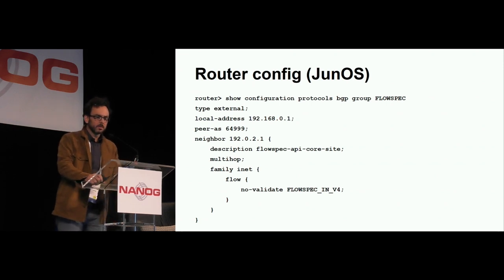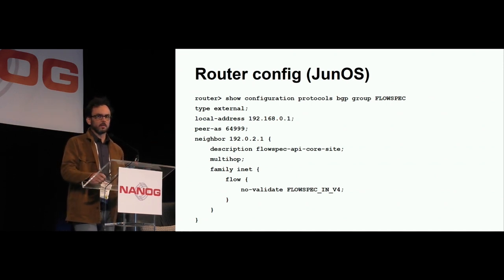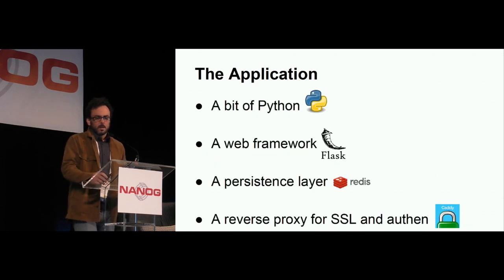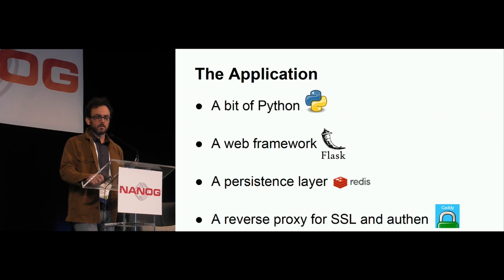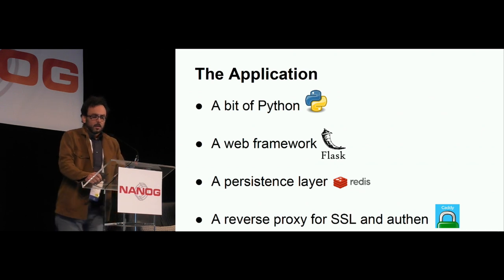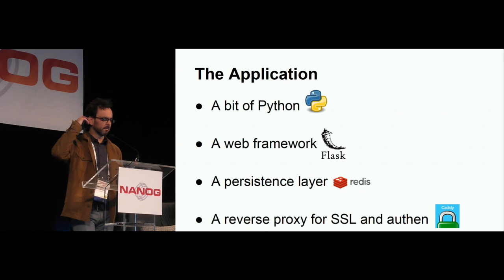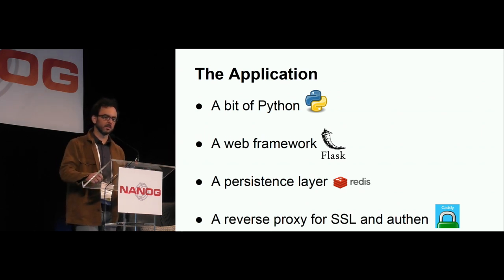The application itself is simple — it's a little bit of Python. Using the Flask framework, which is a web framework you can use for APIs or for anything really. The persistence layer — we chose Redis because it's simple, it's fast, it's well-known, and it allows for replication. And then there's a simple reverse proxy so we can do SSL certificates and authentication.